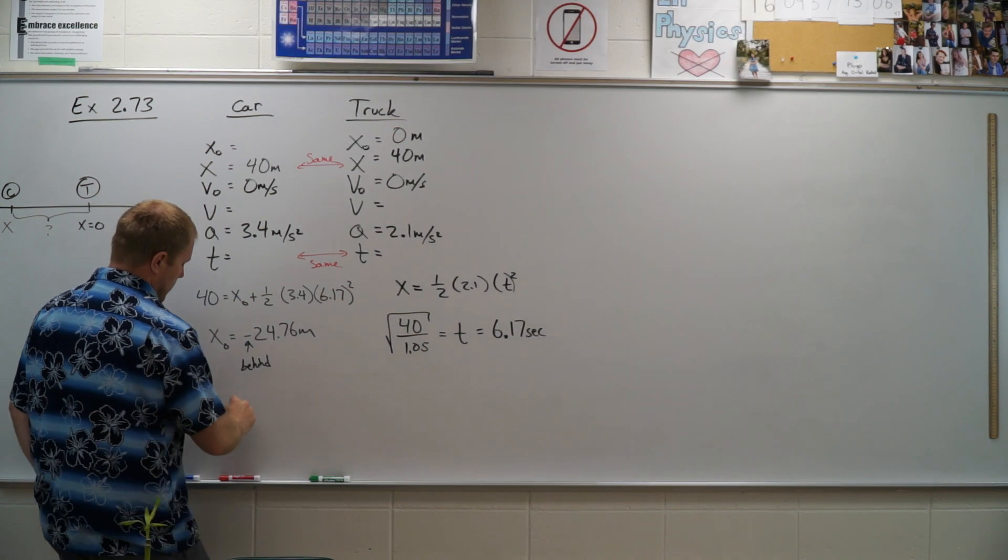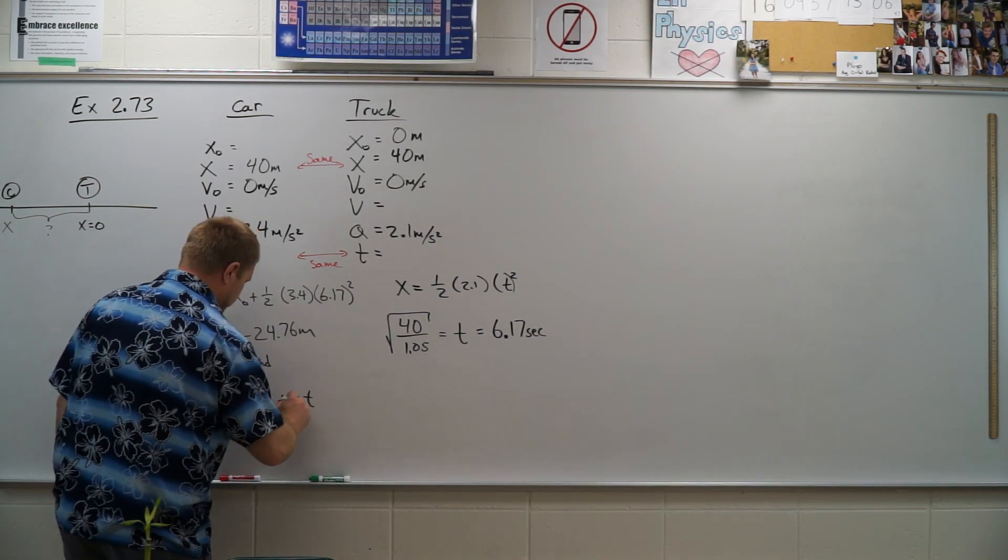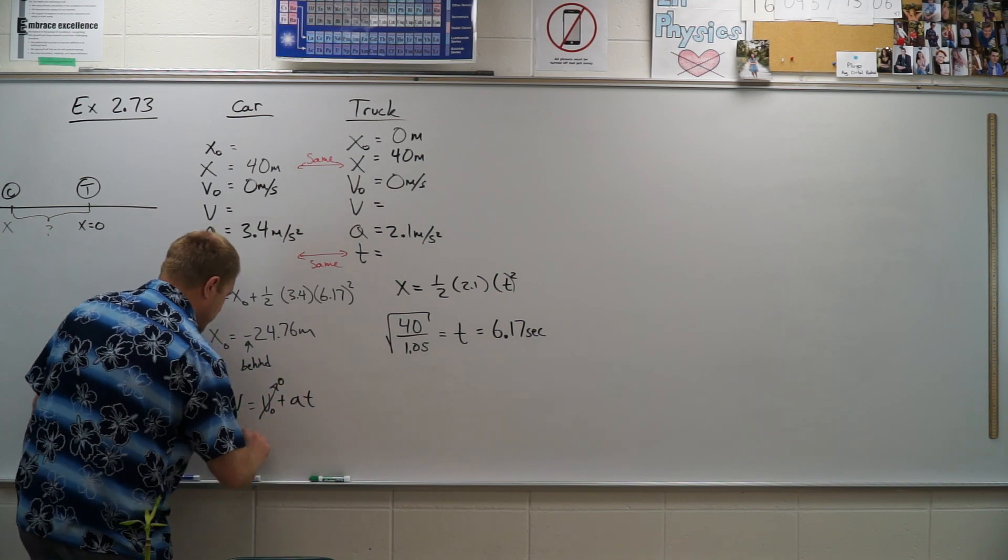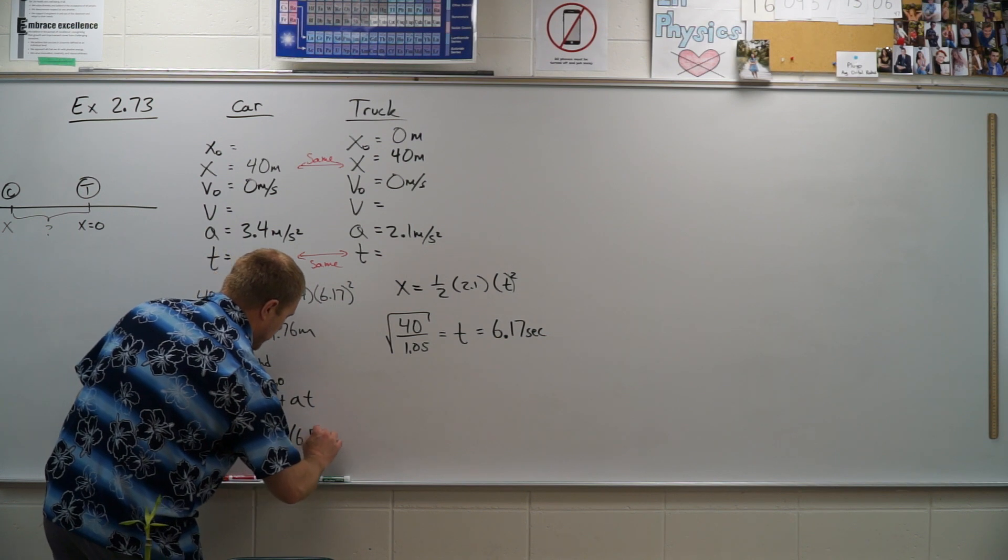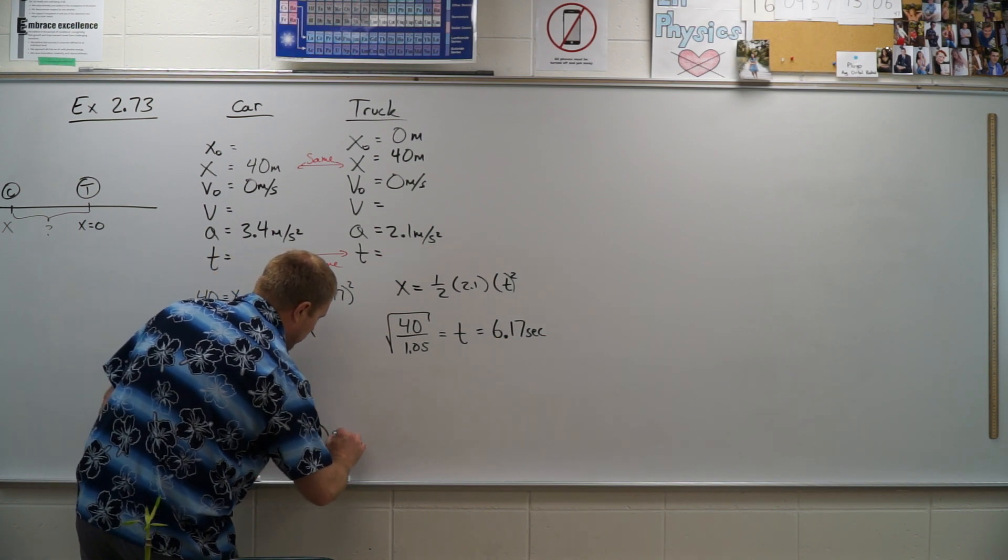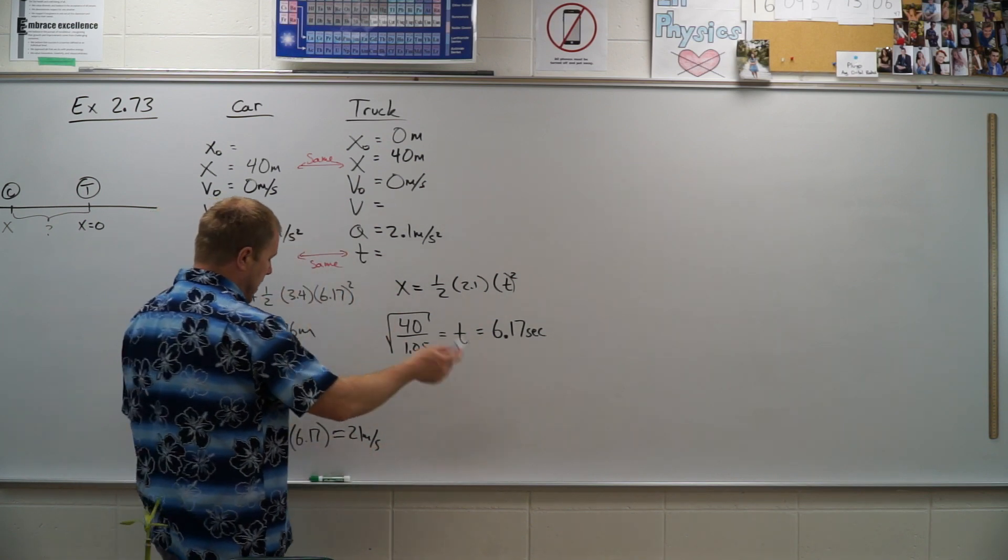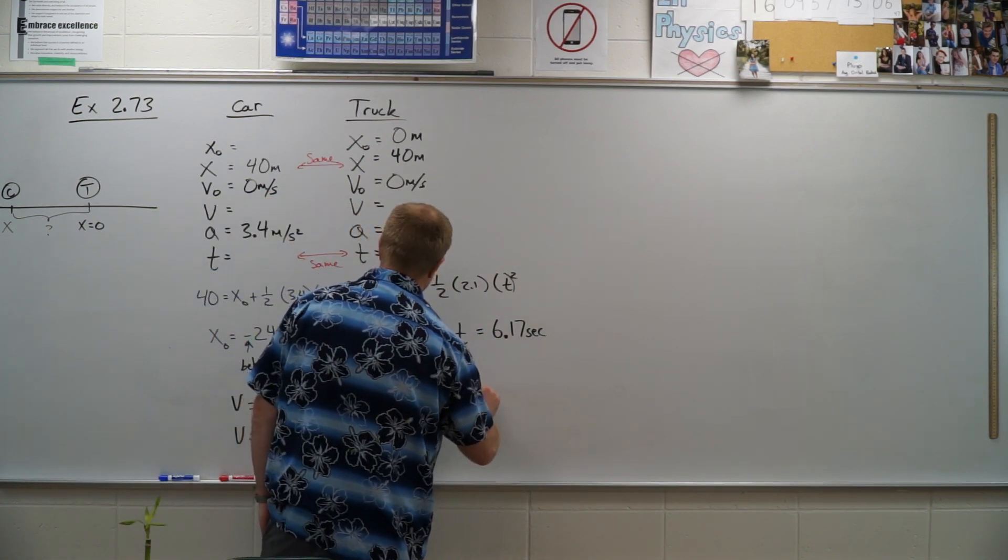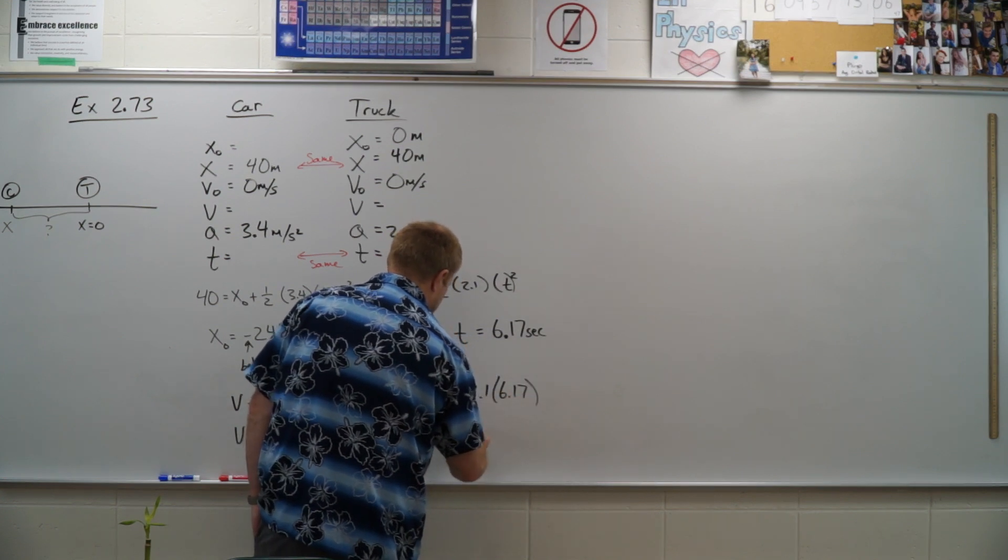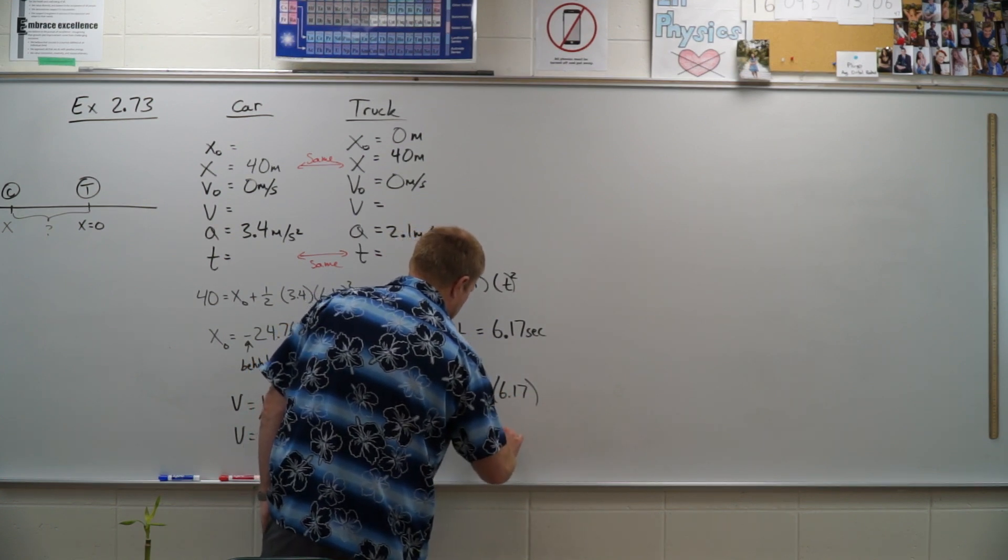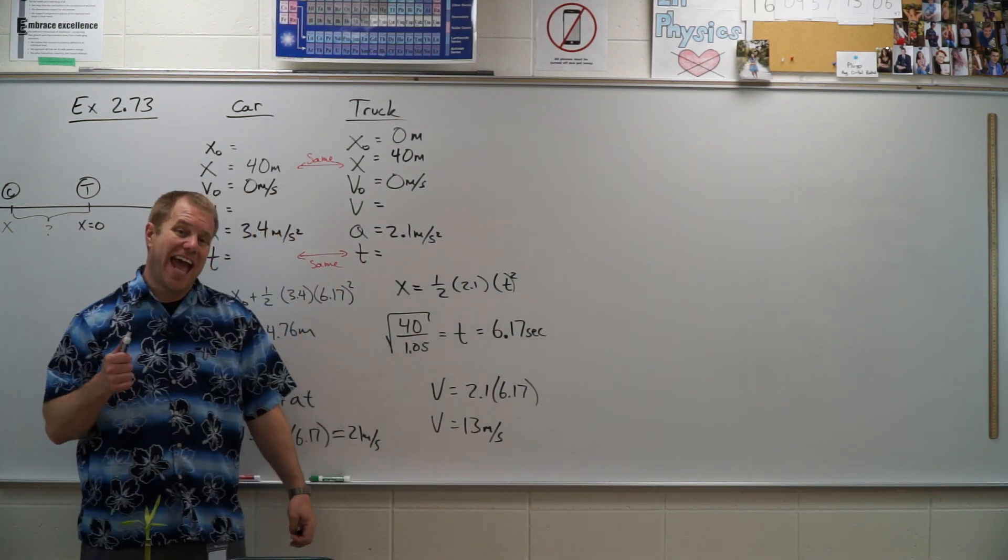So I'm going to use the first equation there, so v is equal to v naught plus a t. So all I need to do is put in my 3.4 times my 6.17, and I get about 21 meters per second. When I do it over here, I get v is equal to 2.1 times 6.17, and this comes out to about 13 meters per second. So yes, the car is moving faster than the truck at that point.